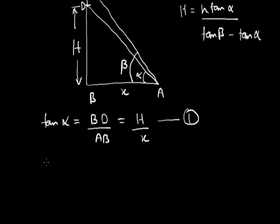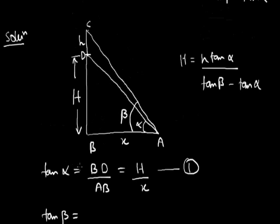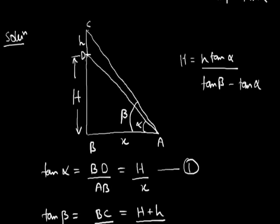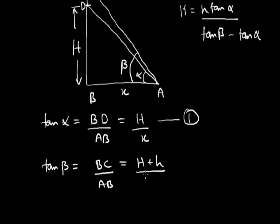Now for the angle of elevation beta, we observe triangle ABC where the angle of elevation is beta. tan β equals BC upon AB. BC equals capital H plus small h, because BC is BD plus CD, where BD is capital H and CD is small h. So the second equation is: tan β = (H + h) / x.